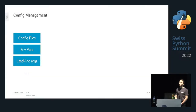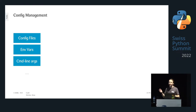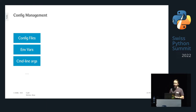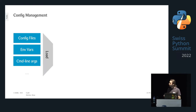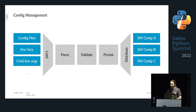Configuration management is basically about getting configuration from different sources when you write a program. You don't want paths hard-coded in the script. Instead, config comes from outside: configuration files, environment variables (especially for secrets), or command line arguments. All of this tells our program how to behave.